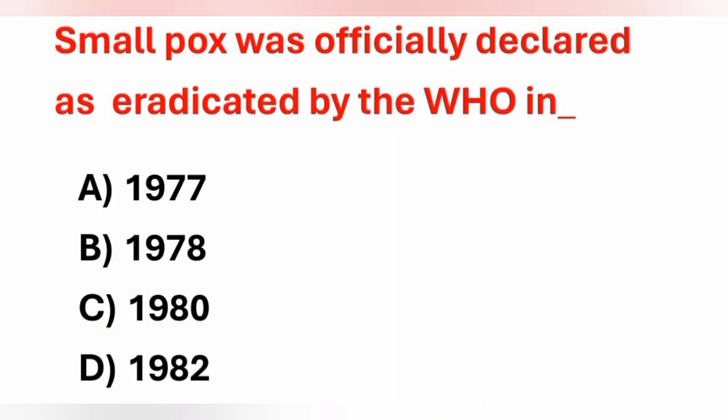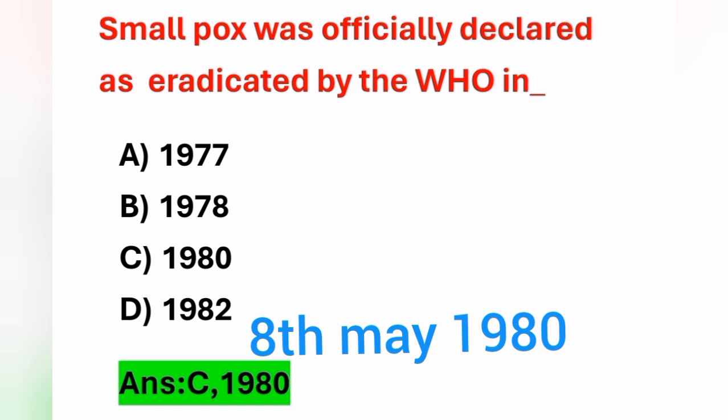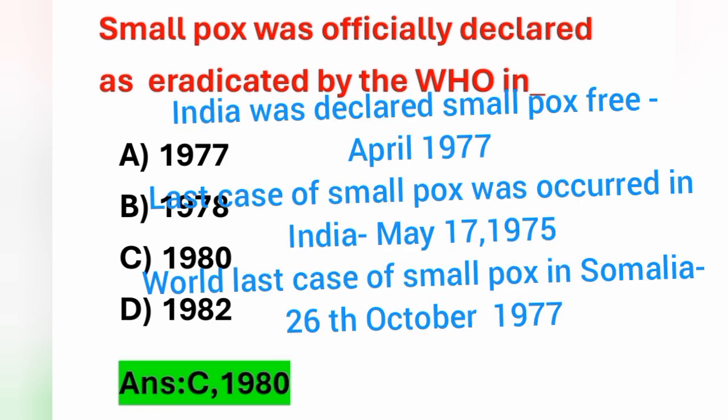Next question: Smallpox was officially declared as eradicated by the WHO in? Options: A) 1977, B) 1978, C) 1980, D) 1982. When did the WHO declare smallpox eradicated? The year is 1980. On 8th May 1980, the WHO declared smallpox had been eradicated. Important point: India was declared smallpox-free in April 1977. The last case of smallpox in India occurred on May 17, 1975. The world's last case of smallpox in Somalia was reported on 26th October 1977.